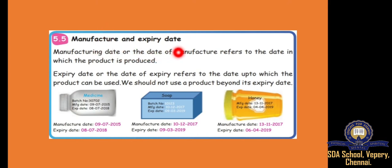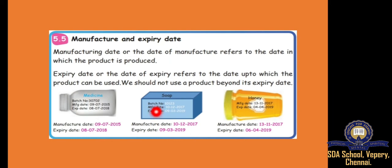The next topic is manufacture and expiry date. What is manufacture? Manufacture means, for example, we are buying one soap. When that soap was manufactured — when they made the soap, whether in 2017, 2018, 2019 or 2020, in which year and which month, January, February or December, and which date. So we should know the manufacture date as well as expiry date.